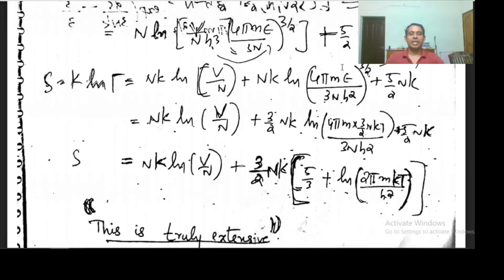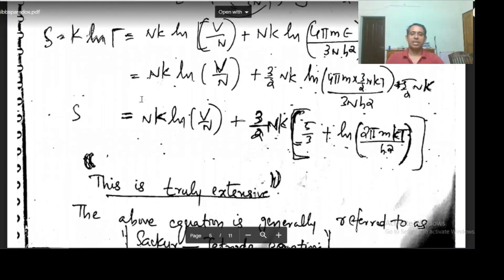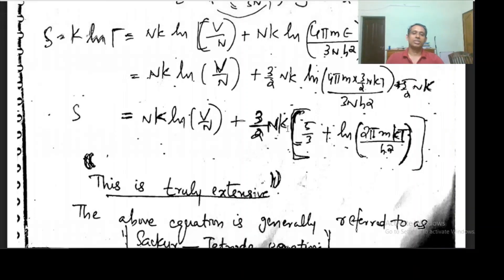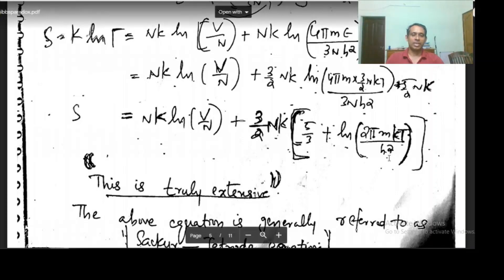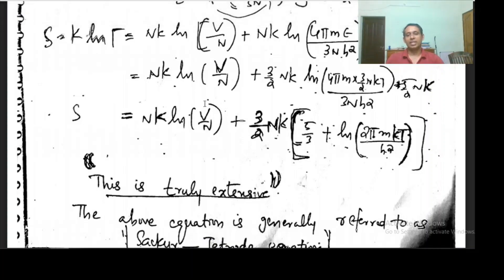For energy, I substitute E = 3/2 nkT. Finally I get the relation: S = nk log(v/n) + 3/2 nk [5/3 + log(2πmkT/h²)]. So here we have v/n.